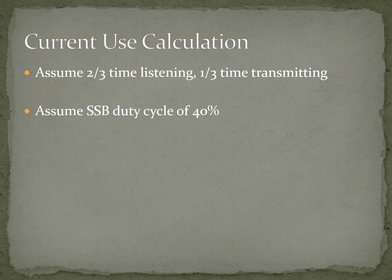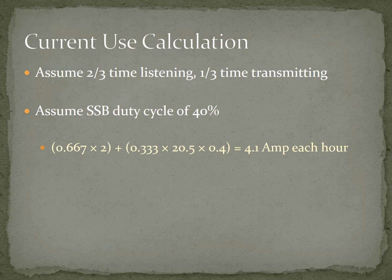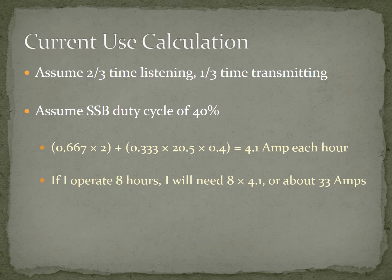Let's assume that two thirds of the time we're listening and one third of the time we're transmitting — and that's really how it should be. Remember, we were built with two ears and one mouth, so listen twice as much as you speak. Assuming a duty cycle of about 40%, we take two thirds times two amps for receive, and add one third times 20.5 amps times 40% duty cycle. That tells us we're using 4.1 amps per hour. If I operate for eight hours, I'm going to need about 33 amps.